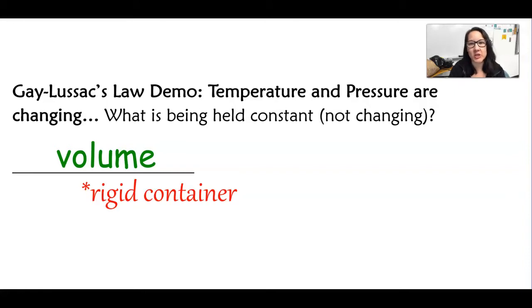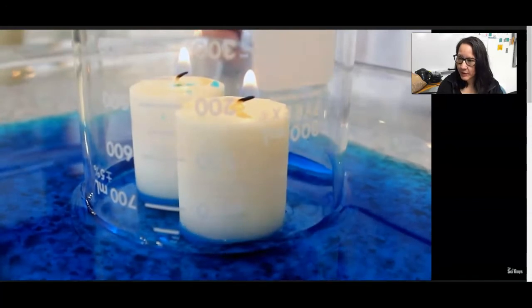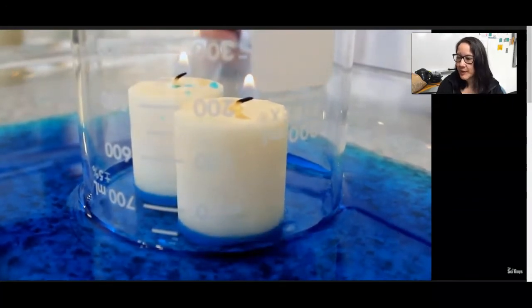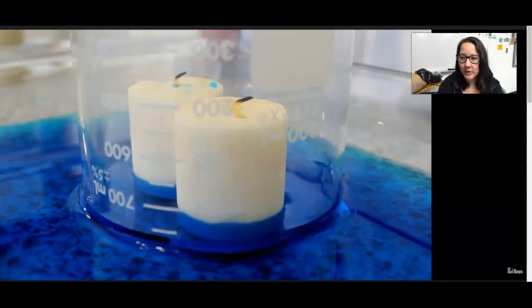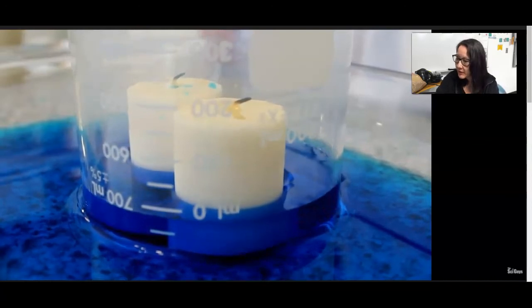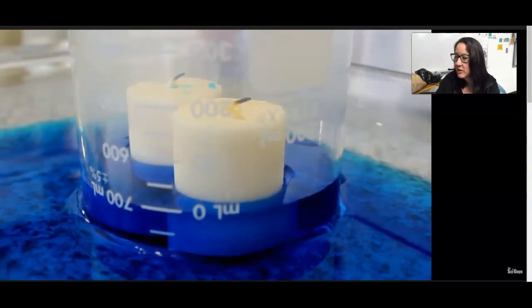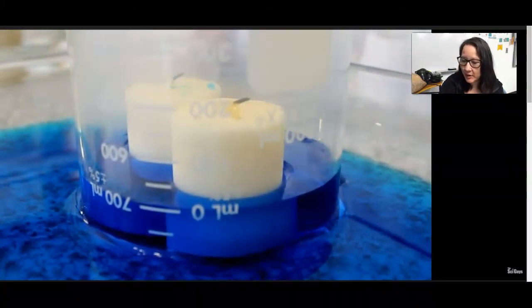So let's look at some demonstrations. So if you'll notice, they have the candles lit, and the beaker is on top. So the air is being heated, which is making the pressure increase, pushing the water at the bottom. But as the candle goes out, now the air is cooling. The temperature is decreasing, so the pressure is also decreasing, which is what's causing the water level to rise inside of the beaker.